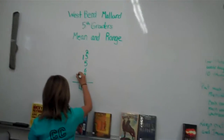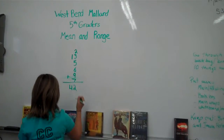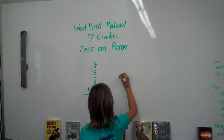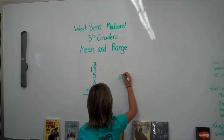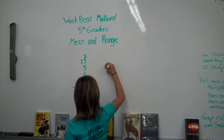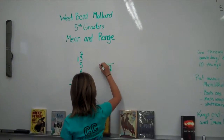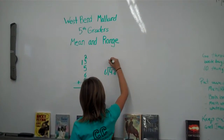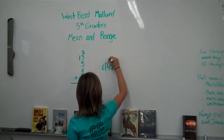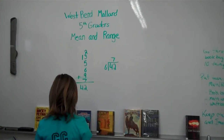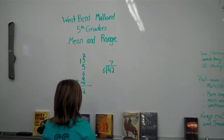The answer is forty-two. So, first you add them up. Then you take forty-two and divide it by six since there are six basketball players. That is your answer.